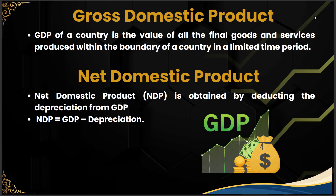Starting from gross domestic product: GDP of a country is the value of all the final goods and services produced within the boundary of a country in a given time period. All goods and services produced within India's boundary count. Importantly, when we speak about GDP and the boundary of a country, the production can be of Indian citizens as well as foreign nationals — for example, a foreign company having a branch in India. That production is counted into the GDP of India.